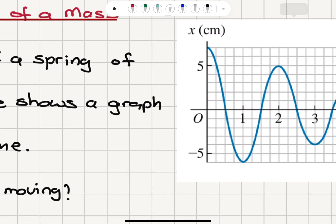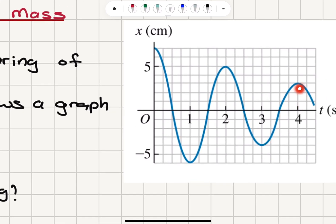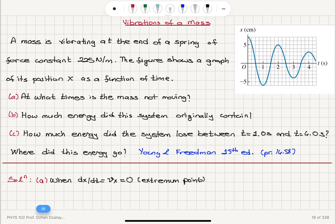We have t equals 0, t equals 1, t equals 2, t equals 3, and t equals 4 seconds, the extremum points. So t equals 0, 1, 2, 3, 4, etc.